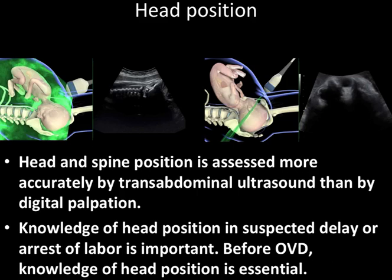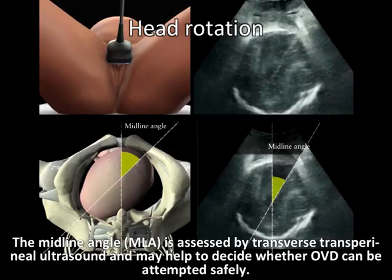Head position and spine position are assessed more accurately by transabdominal ultrasound than by digital palpation. Knowledge of head position in suspected delay or arrest of labor is important; before operative vaginal delivery, it is essential. Head rotation can be measured by obtaining the midline angle. This is assessed by transverse transperineal ultrasound and it may also help to decide whether operative vaginal delivery can be attempted safely.